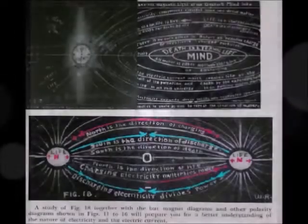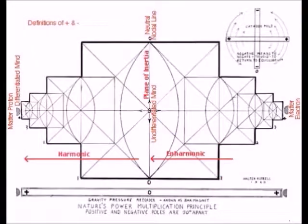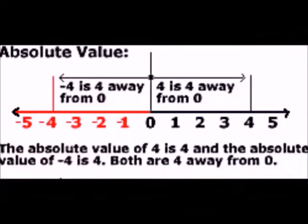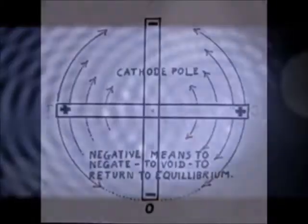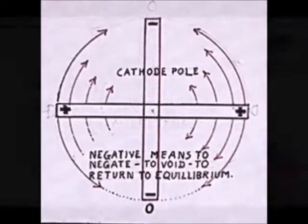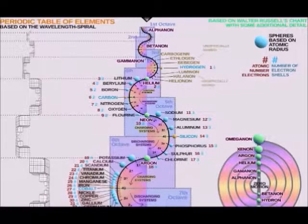A single particle, all by itself, doesn't do very much. But if you take two particles — a proton and an electron — and you put them together, their waves join with certain rules. Electron waves will form patterns. The violinist knows that there are patterns inside that violin case. In the same way, these patterns form between particles.